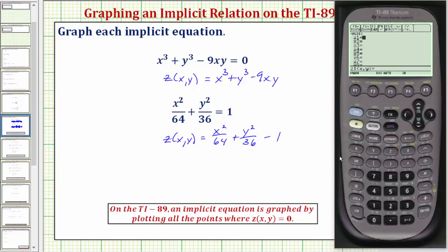Let's z comma y equals x raised to the power of two, divided by 64, plus y raised to the power of two, divided by 36, minus one. Enter.